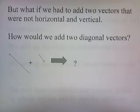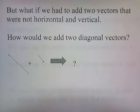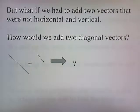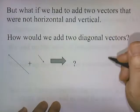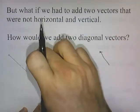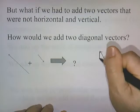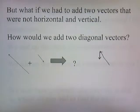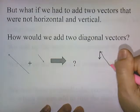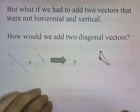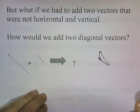But what if we had to add two vectors that were not horizontal or vertical? How would we add two diagonal vectors? You draw the first vector and then take the second vector and put the tail of it at the head of the first. Then you draw a line from the tail of the first to the head of the second, and there's your resultant vector. That's how you would add two diagonal vectors by drawing.